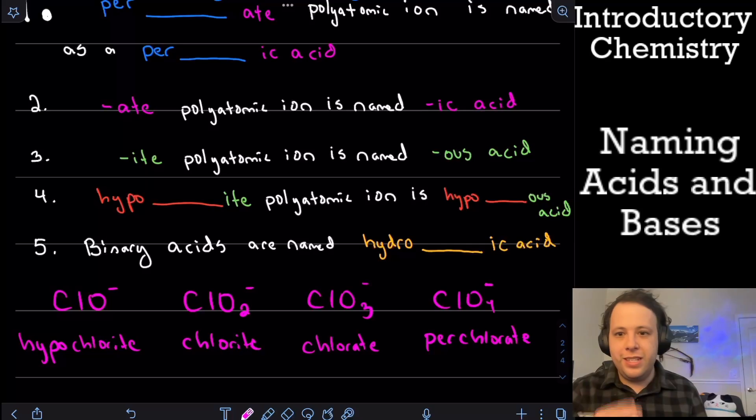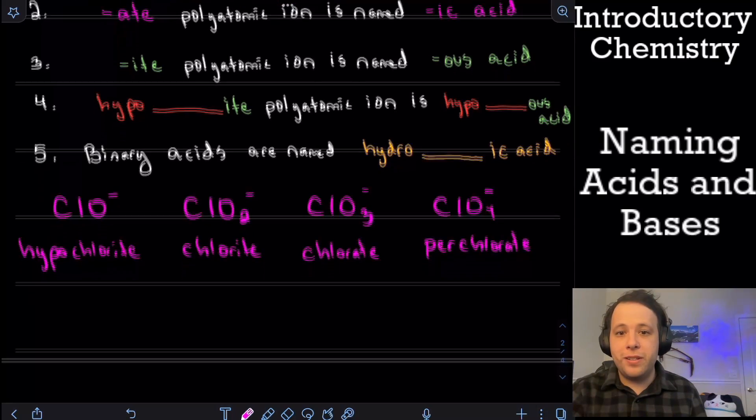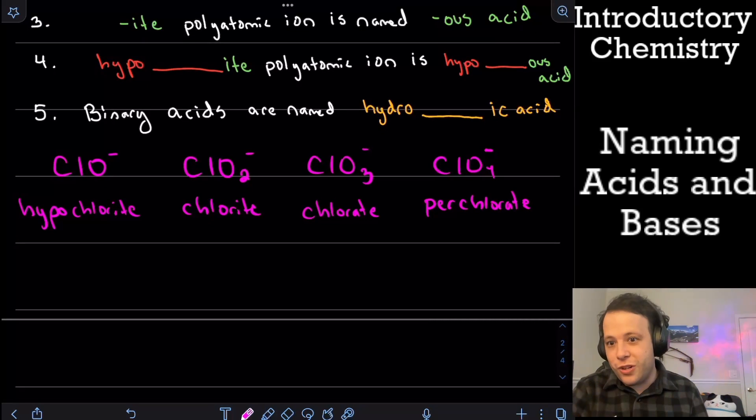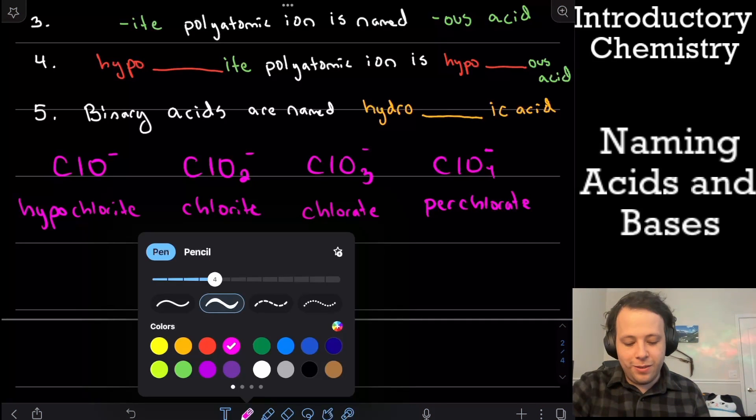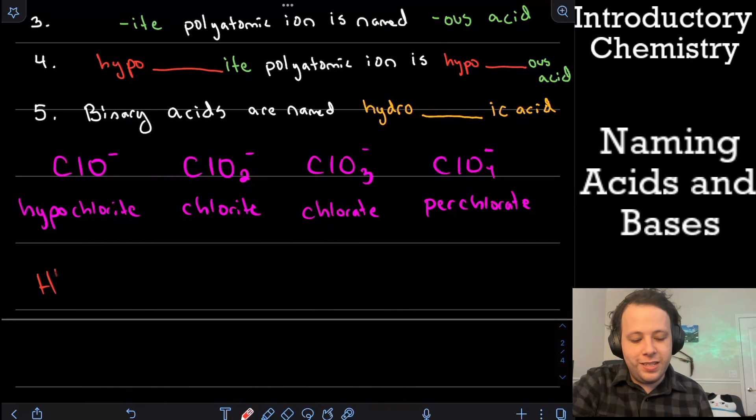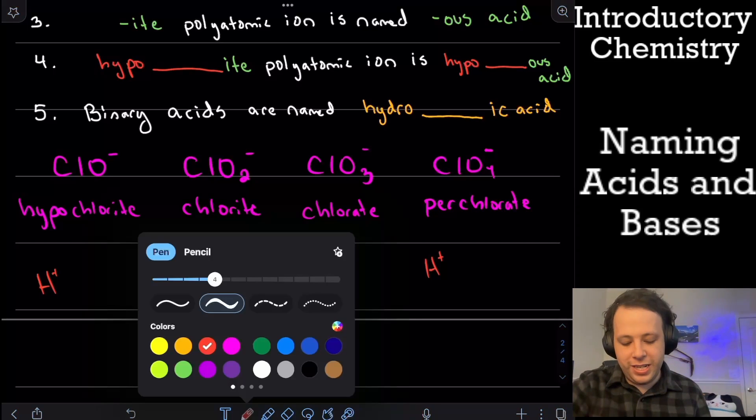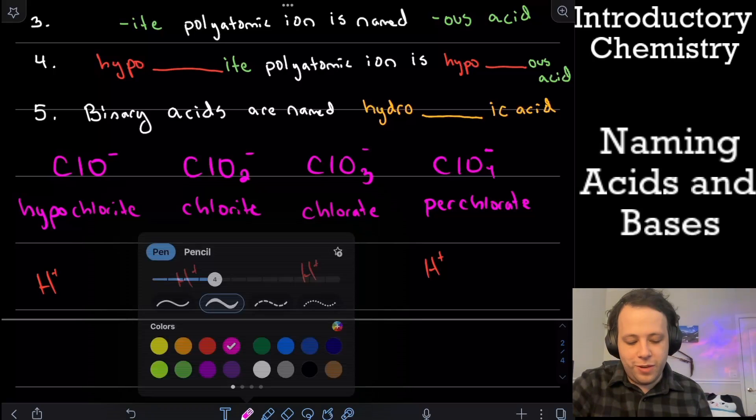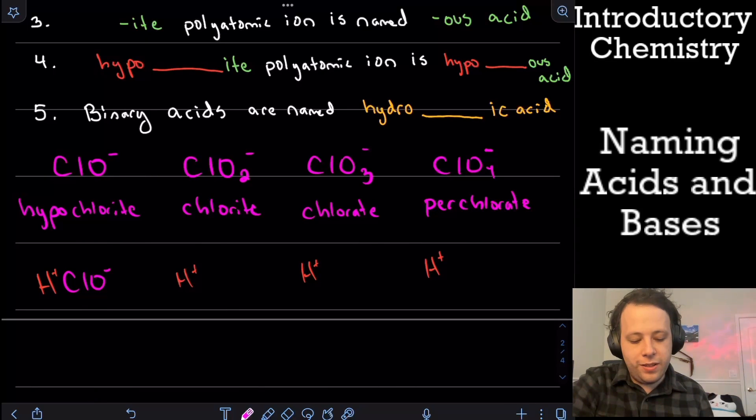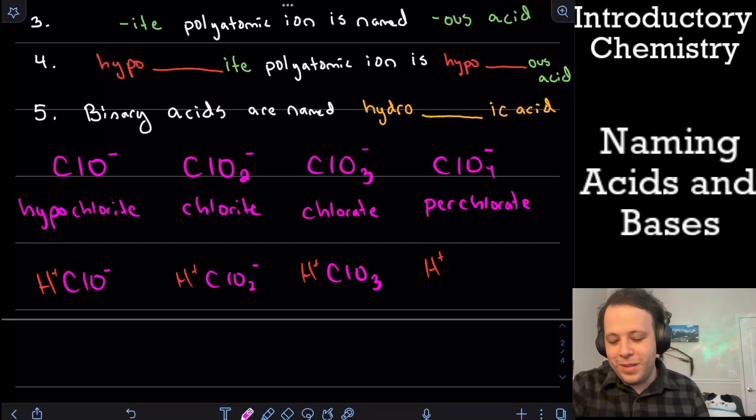Now, if I wanted to make these all acids, how would I go about doing that? Well, they all have a negative one charge. So how many protons or hydrogens do I need to balance that out? Well, each one of them is going to need one H+ to balance all of these different species out. So if I want to write that down, we'd have HClO-, ClO2-, ClO3-, and so on.